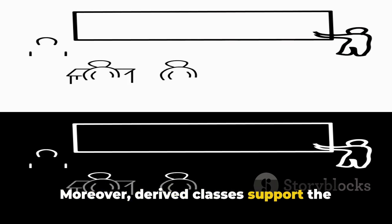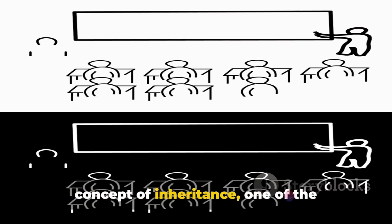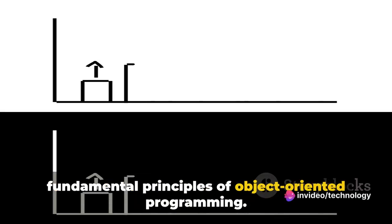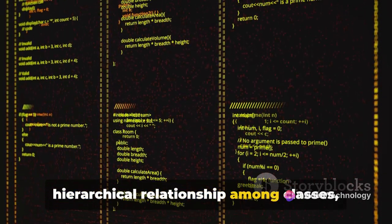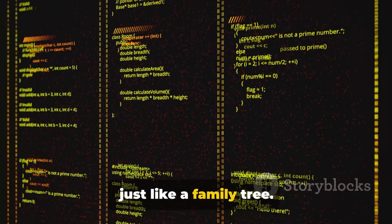Moreover, derived classes support the concept of inheritance, one of the fundamental principles of object-oriented programming. This principle allows us to create a hierarchical relationship among classes, just like a family tree.